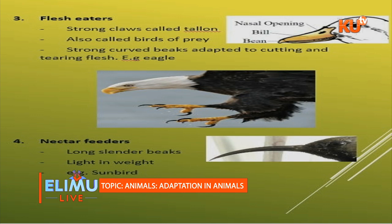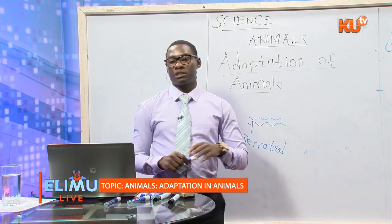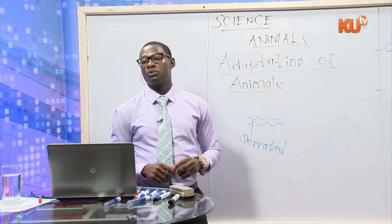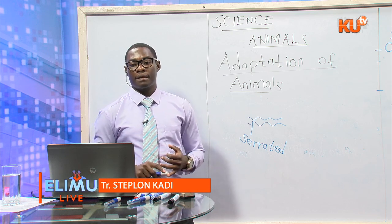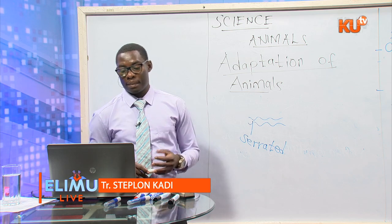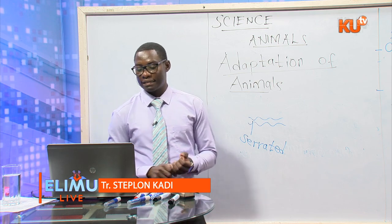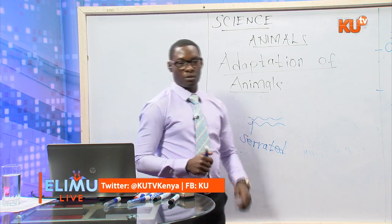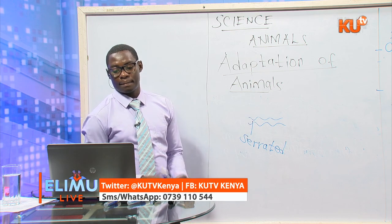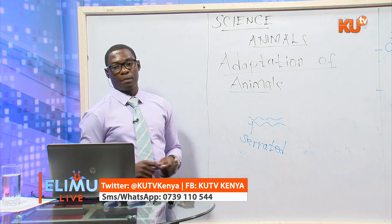Flesh eaters — an example is an eagle — have strong claws called talons. These strong claws can hold prey and help in tearing. They also have a strong, curved beak adapted to cutting and tearing flesh. Nectar feeders have a long and slender beak. They are also light in weight, because they balance on air or perch on flowers, which cannot support a heavy weight. An example of a nectar feeder is a sunbird, and also a hummingbird.